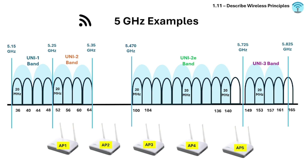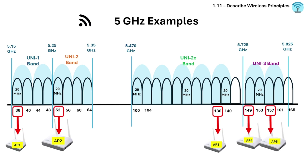For example, at your office there are five access points. To avoid overlap, AP1 can use channel 36, AP2 channel 52, AP3 uses channel 136, AP4 channel 149, and AP5 channel 157. This allows multiple access points to run at full speed without stepping on each other's signals.